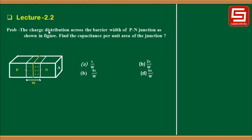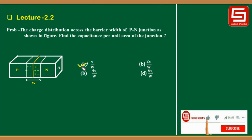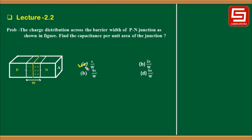In Lecture 2.2, we gave a practice problem: the charge distribution across the barrier width of a pn junction as shown in the figure — find the capacitance per unit area of the junction. The correct option is A. The solution has been uploaded to our Telegram channel; those who haven't solved it can download the solution from the link in the description box.